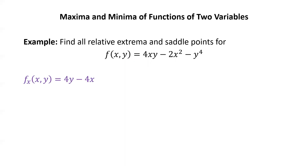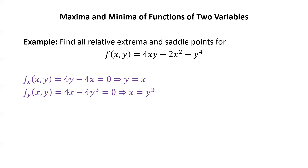We start by taking the partial derivatives. The partial of f with respect to x is 4y minus 4x. Setting that equal to zero gives y equals x. Next, the partial of f with respect to y is 4x minus 4y cubed. Setting that equal to zero gives x equals y cubed. We now have to solve this system of equations for x and y.